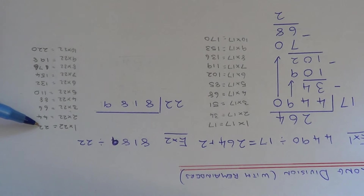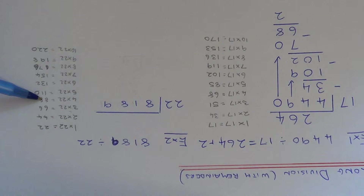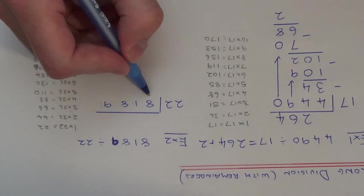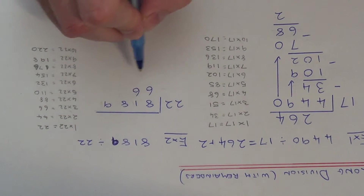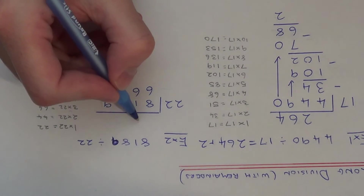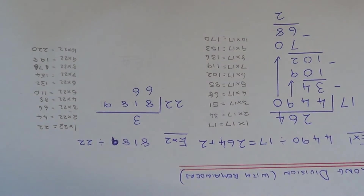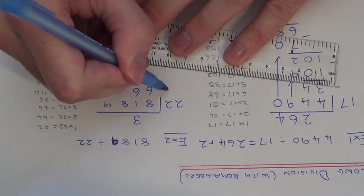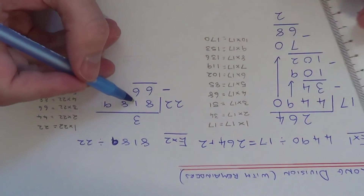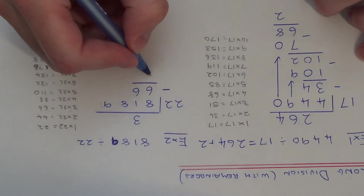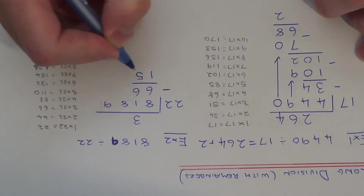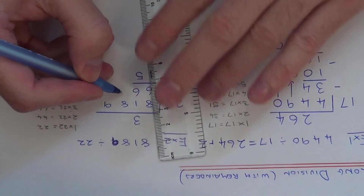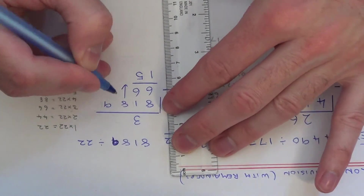Look for our best multiple of 22: 22, 44, 66, 88 — 88 is too big, so we need to stop at 66. Put 66 underneath — that's 3 times 22, so put the 3 at the top. Take these away: 81 take away 66 gives 15. Bring the 8 down from the top to make it 158.